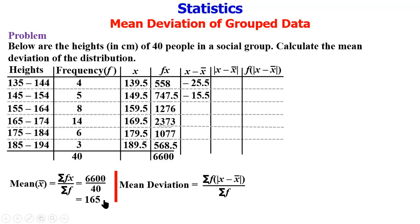159.5 minus 165 gives minus 5.5. 169.5 minus 165 gives 4.5. 179.5 minus 165 gives 14.5. And finally 189.5 minus 165 gives 24.5. We take the absolute value, returning all of them as positive. So that's giving us 25.5, 15.5, 5.5, 4.5, 14.5, and 24.5.